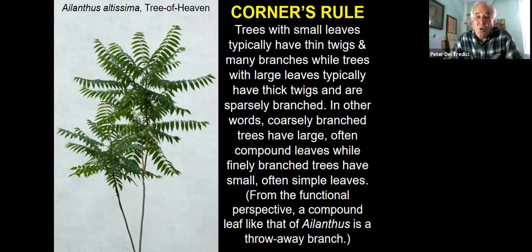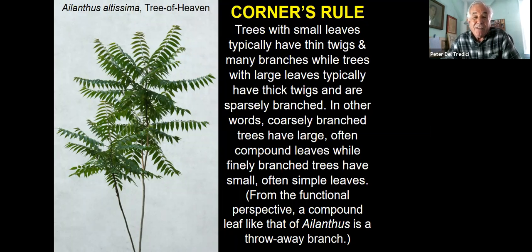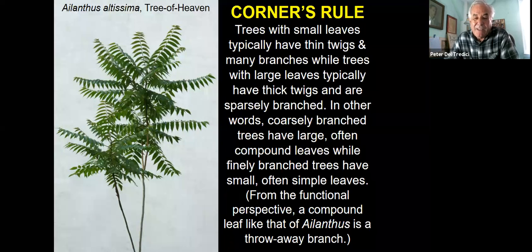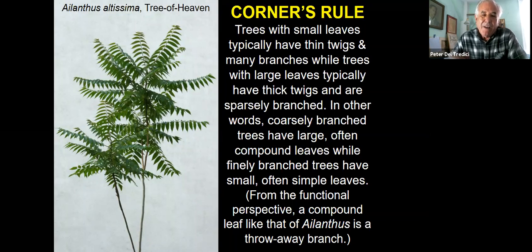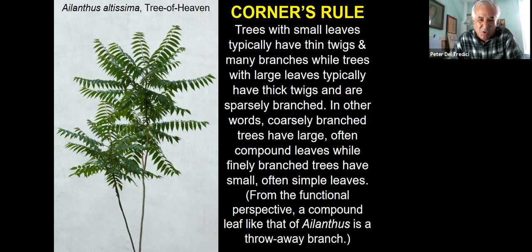There are some basic rules for understanding tree form, one of which is known as Corner's Rule: trees with small leaves typically have thin twigs and many branches, while trees with large leaves — like the ailanthus, the tree of heaven — typically have thick twigs and are sparsely branched. Coarsely branched trees have large, often compound leaves, while finely branched trees have small, often simple leaves. Those long compound leaves are essentially throwaway branches — it sheds the whole thing. It's a way of producing leaves very quickly without actually having to produce wood.